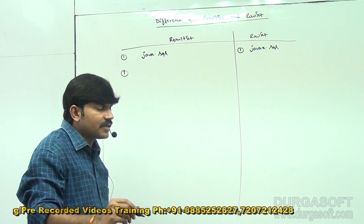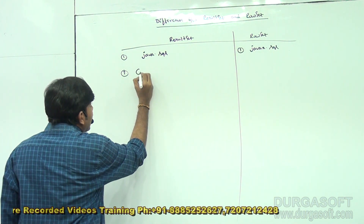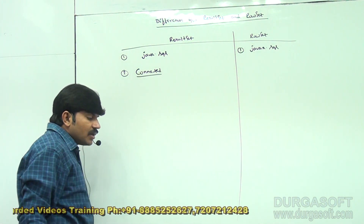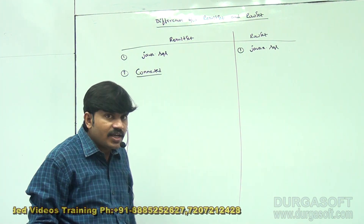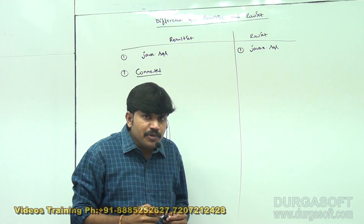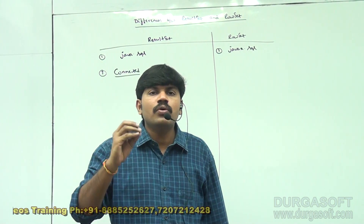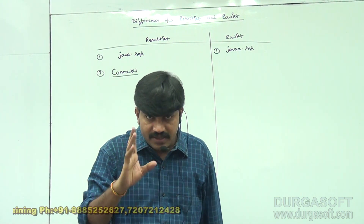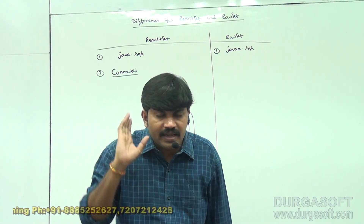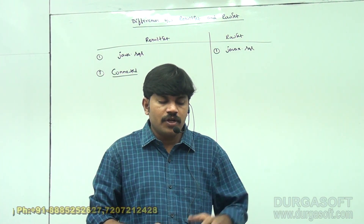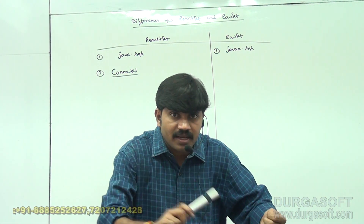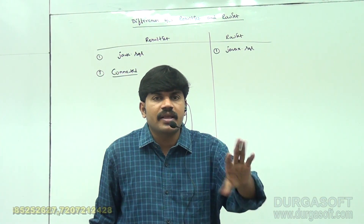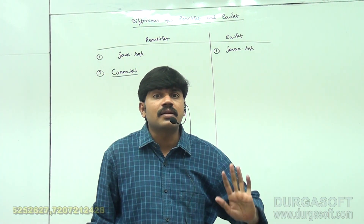By default, ResultSet is always connected. What is the meaning of connected? Without having a database connection, you are not allowed to access data from the ResultSet. If you want to use the ResultSet, compulsory a connection must be there — without a database connection you can't access ResultSet data.